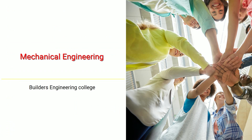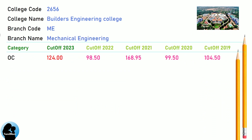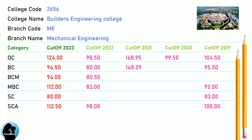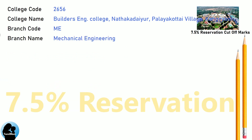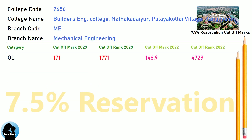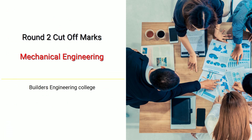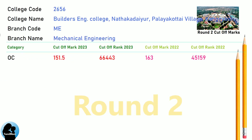DNA Cut-Off for Builders Engineering College in Mechanical Engineering. DNA 7.5 Reservation Cut-Off for Builders Engineering College in Mechanical Engineering. DNA Round 2 Cut-Off for Builders Engineering College in Mechanical Engineering.